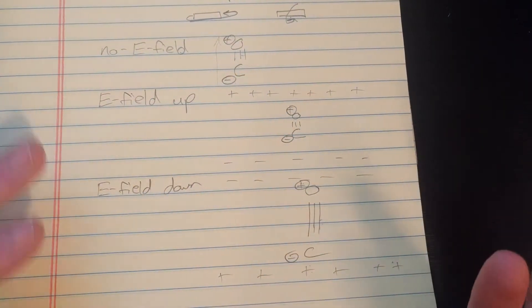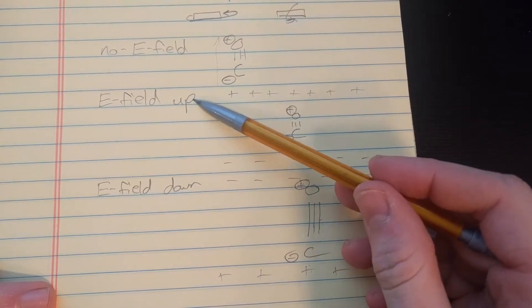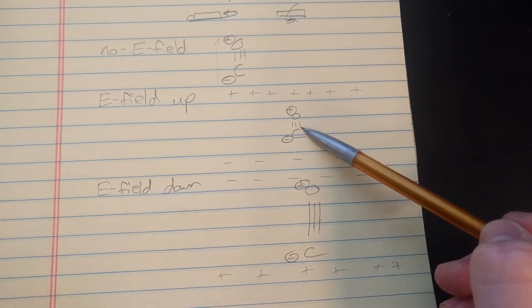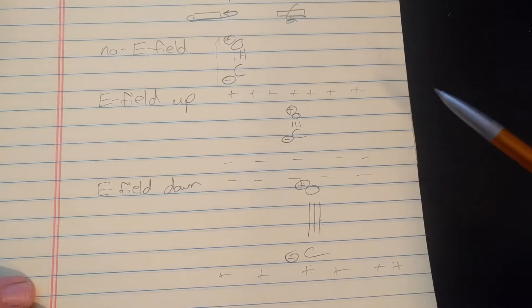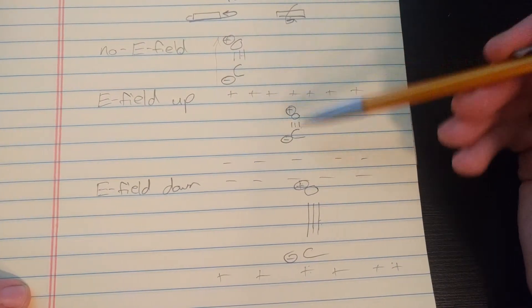And electromagnetic radiation is basically an E field going up and down very, very fast. So, if you put this molecule in the right frequency of electromagnetic radiation, well, then it's going to vibrate this bond up and down really, really fast.